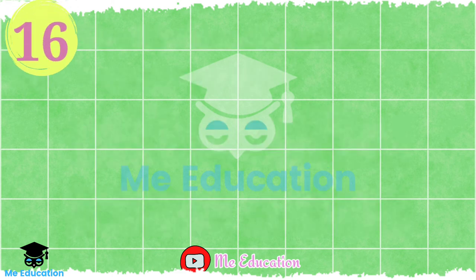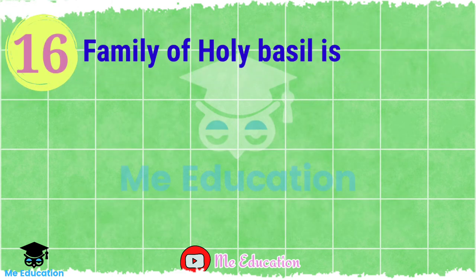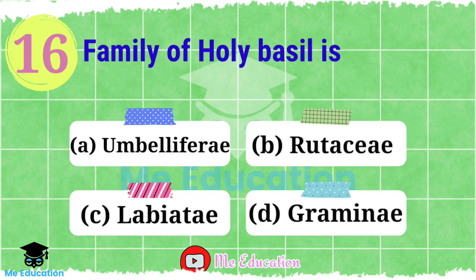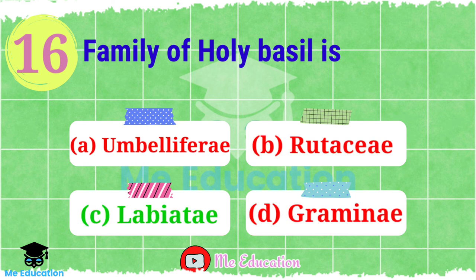Question number 16: The family of holy basil — holy basil is Tulsi. What is the family of holy basil? Option A: Umbelliferae; Option B: Rosaceae; Option C: Labiatea; Option D: Gramineae. The right answer is Option C, Labiatea.